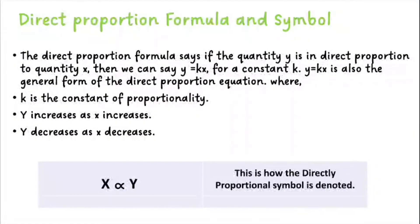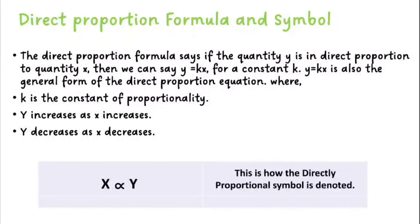The Direct Proportion Formula says if the quantity y is in direct proportion to the quantity x, then we can say y is equal to kx, for a constant k. y = kx is also the general form of the direct proportion equation, where k is the constant of proportionality. y increases as x increases, and y decreases as x decreases. This is how the directly proportional symbol is denoted.